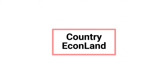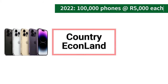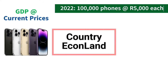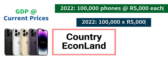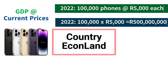Example: let's consider an imaginary country called Econland. In the year 2022, Econland produced 100,000 smartphones and each smartphone was sold for 5,000 rands. The GDP at current prices for 2022 would be calculated as follows: GDP at current prices (2022) equals number of smartphones produced (100,000) times price per smartphone (5,000) equals 500 million rands.